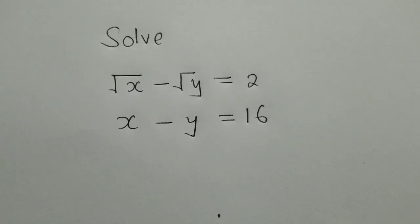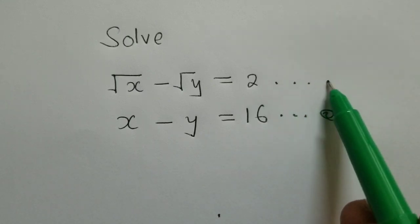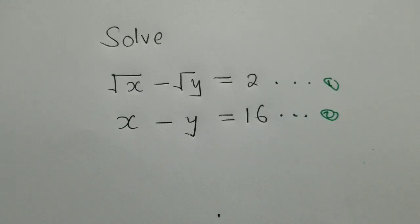We first label the equations. This equation we call equation 2, the other one here we call equation 1. We just label the equations for easy identification.